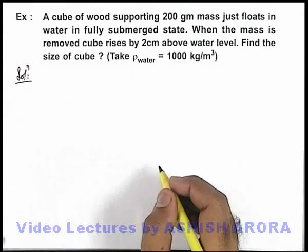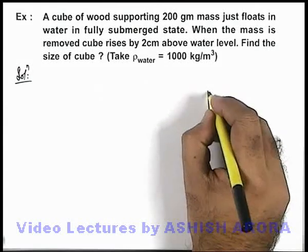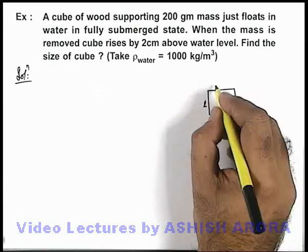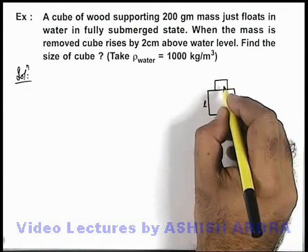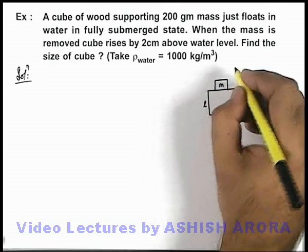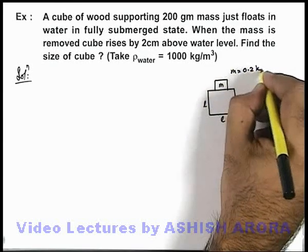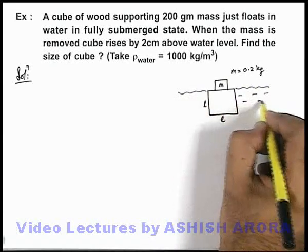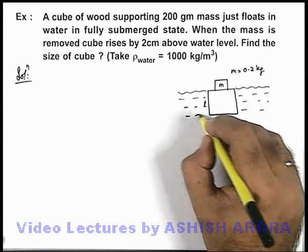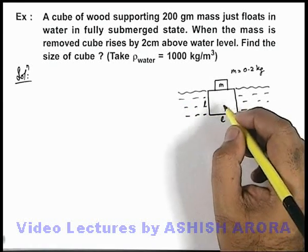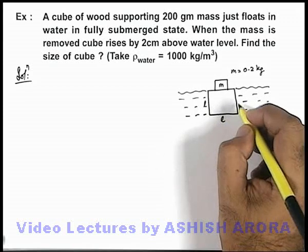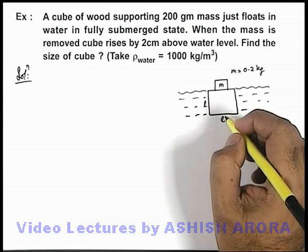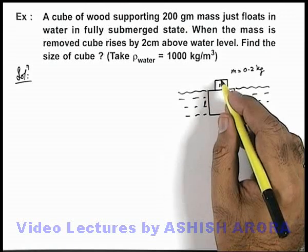In the solution, if we draw the initial situation, this is a cube of size L by L by L, supporting a block of mass m, where m is 0.2 kilograms. Right now it is in a fully submerged state in water. The total weight of the cube plus this mass in this situation is balanced by the total buoyant force from the water.